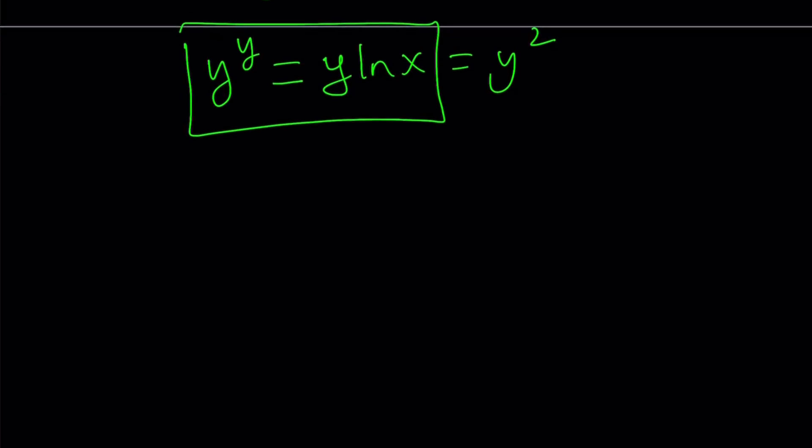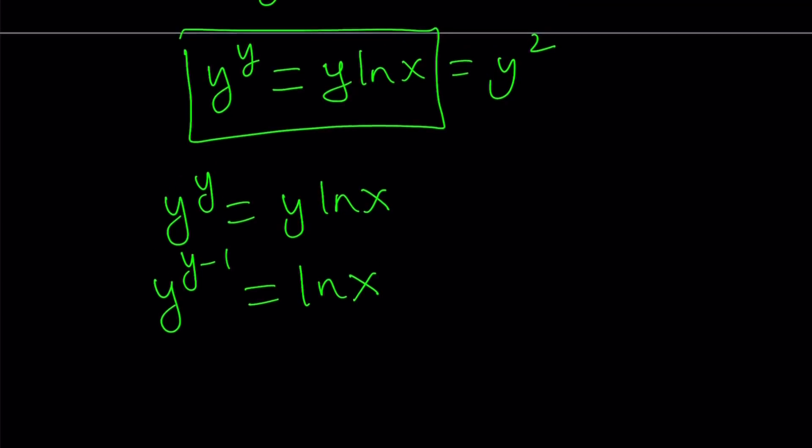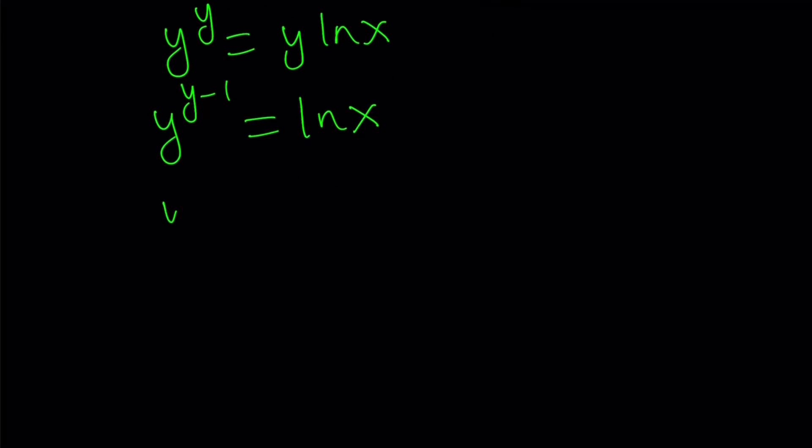But let's go ahead and focus on this now. Obviously, at this point, we have a solution, but I just want to show you an alternative to look at it. So I get y to the y equals y ln x. And then we can basically divide both sides by y. And that is going to give us y to the power of y minus one equals ln x. Great.